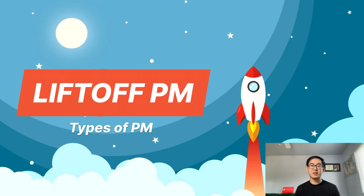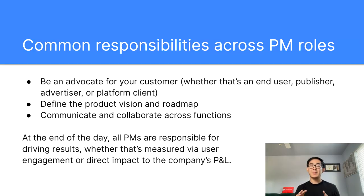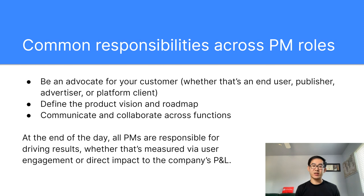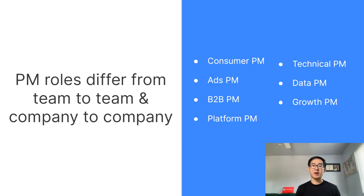From consumer to enterprise, each role requires a different set of skills and comes with different expectations. Just like how the roles and responsibilities of a PM differ from company to company, the roles and responsibilities of a PM in the same company differ from team to team. Let's dive into seven types of product managers. Before we do that, I want to highlight that even though there are differences between these kinds of PMs, there are also commonalities across all of them. No matter the PM position, you'll need to be an advocate for your user — whether that's an end user, publisher, advertiser, or platform client — define the product vision and roadmap, and communicate and collaborate across functions. All PMs are responsible for driving results, whether that's user engagement or direct impact on the company's P&L.